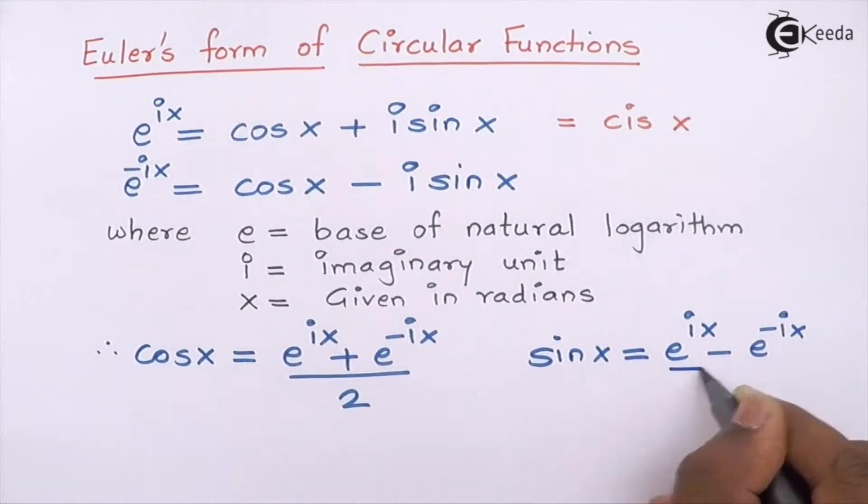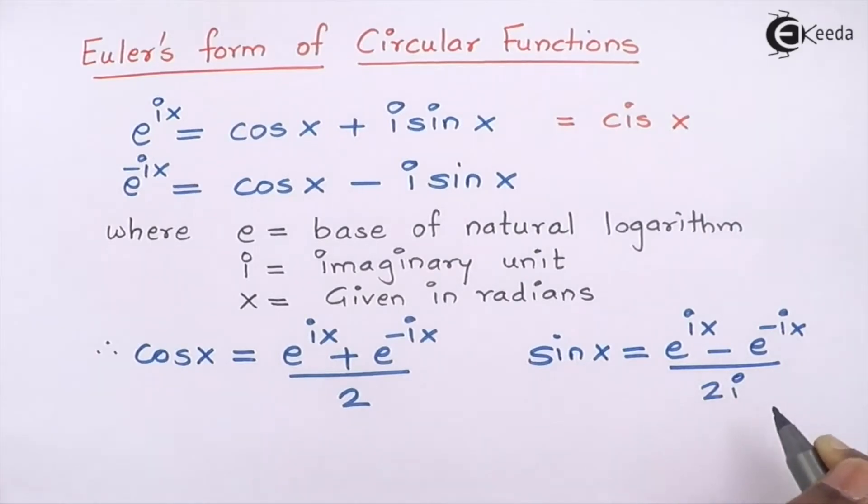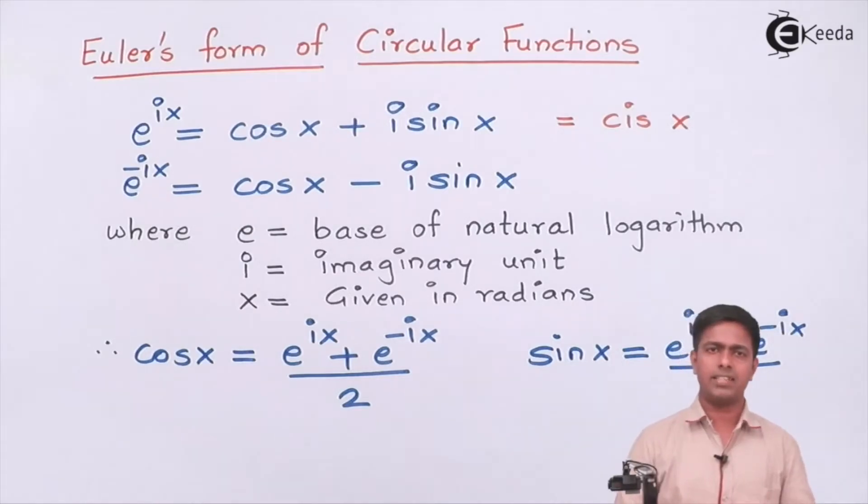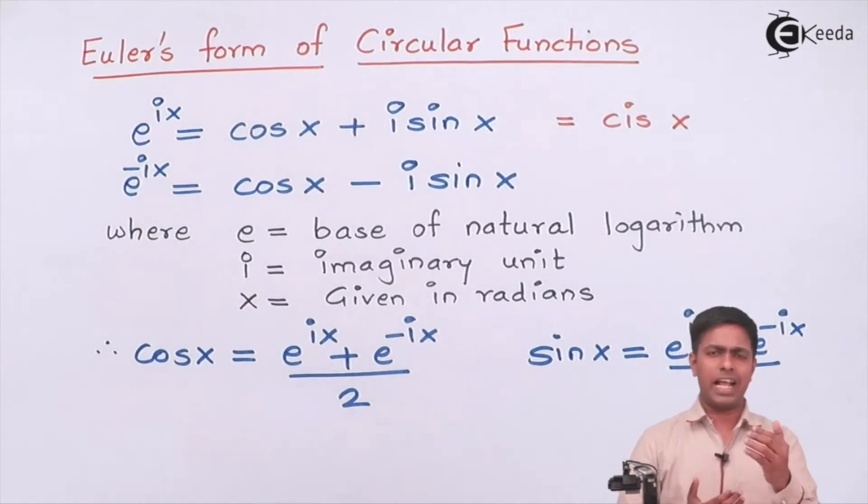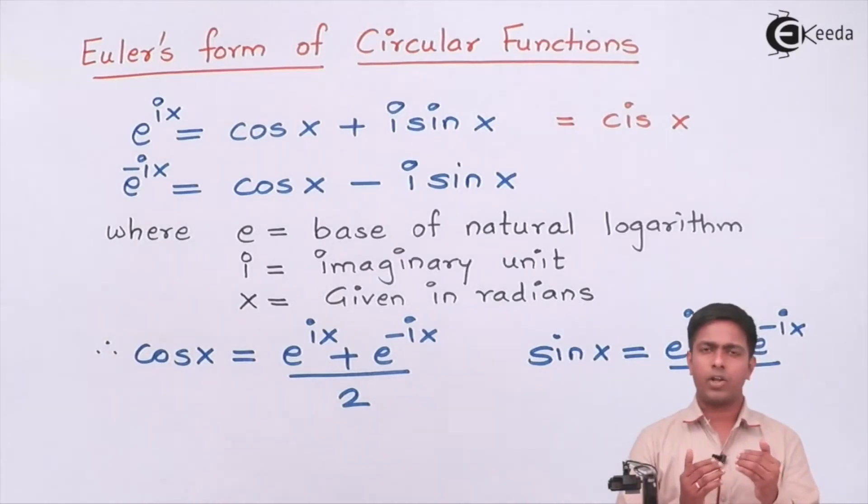As we got sin and cos, now it's very easy to find cosec and sec because they are inverses of sin and cos respectively. It is also easy to find tan and cot because tan is sin/cos and cot is cos/sin.